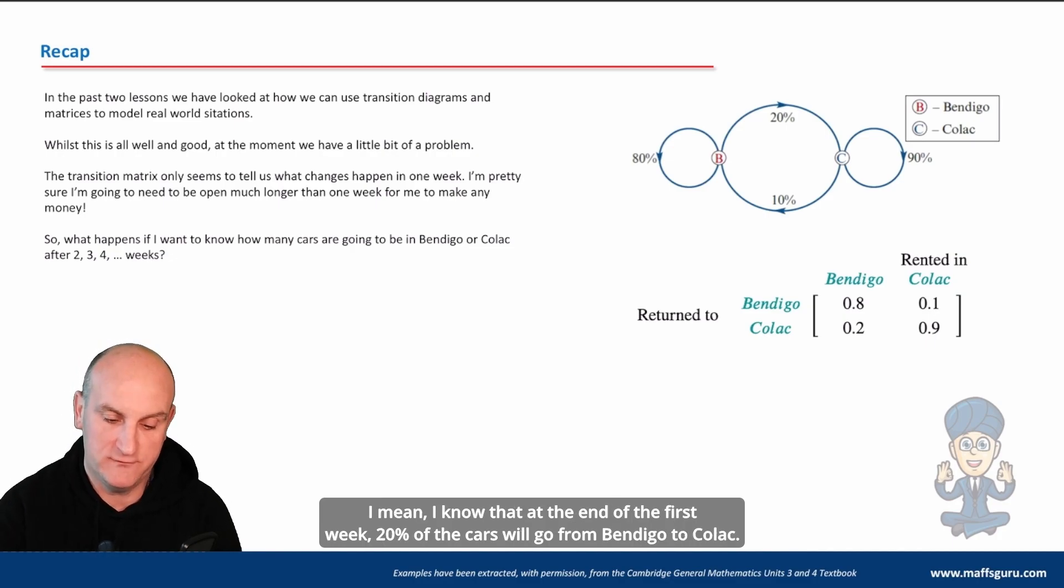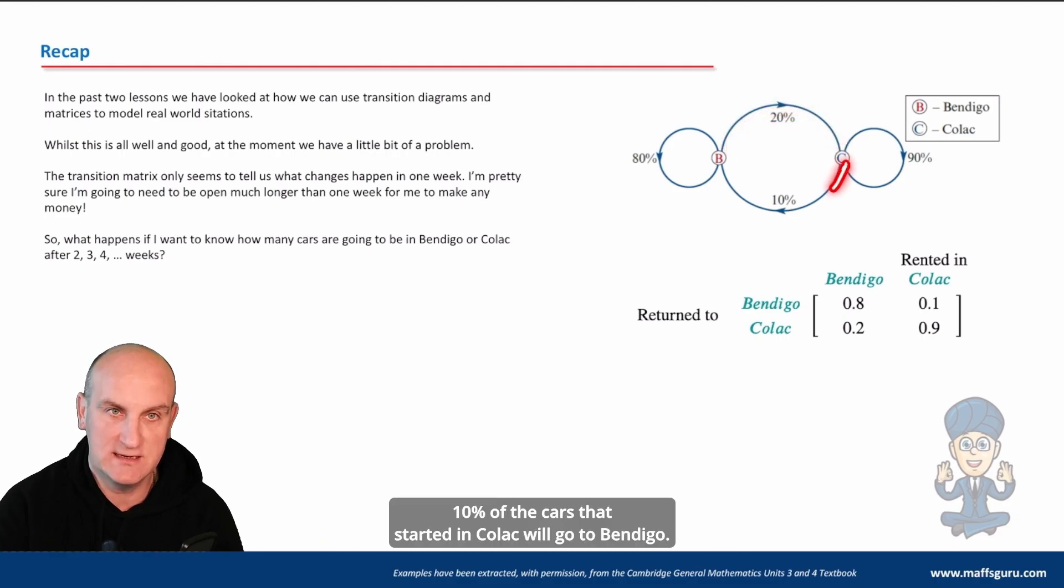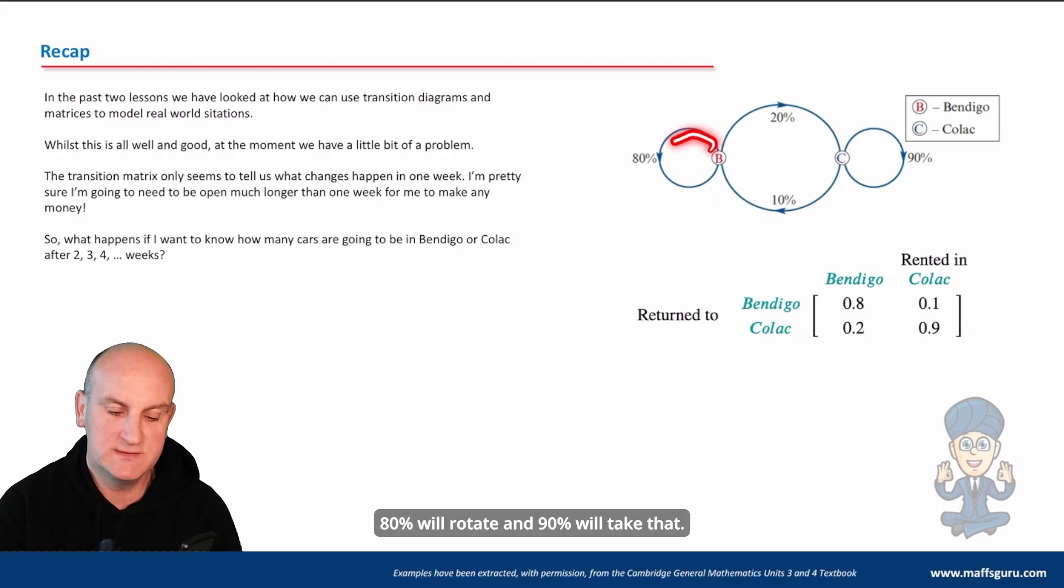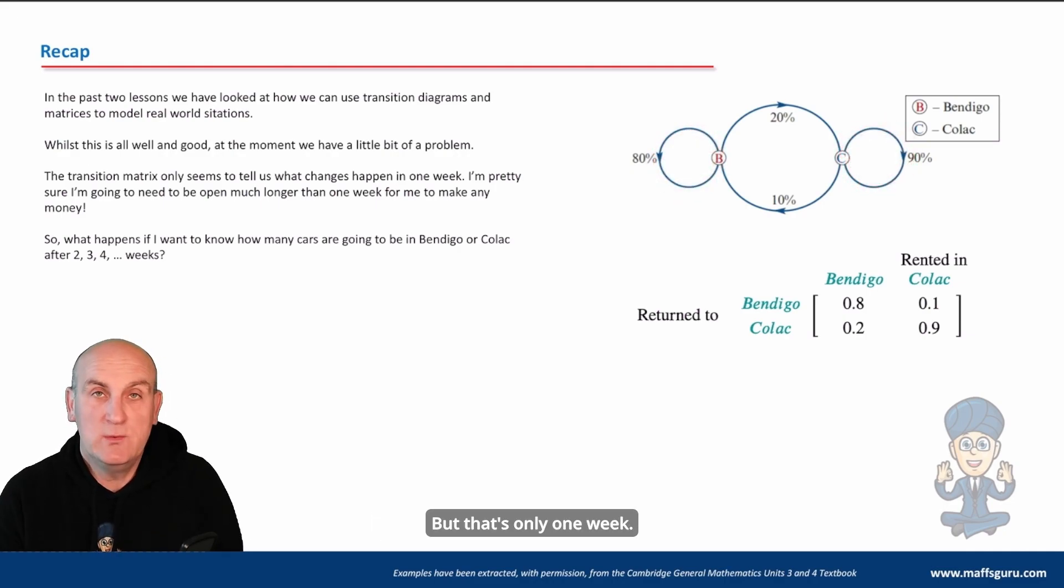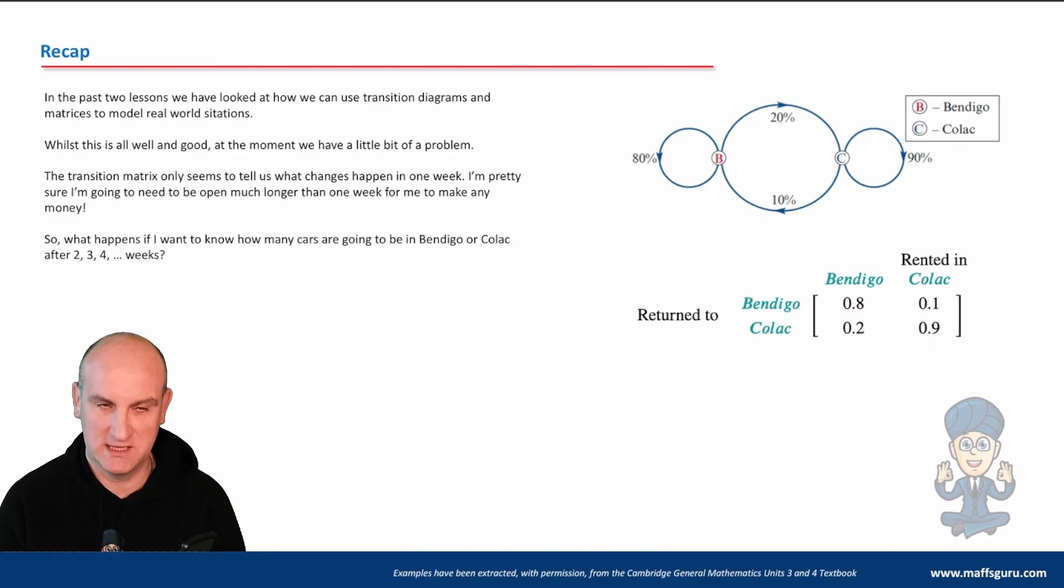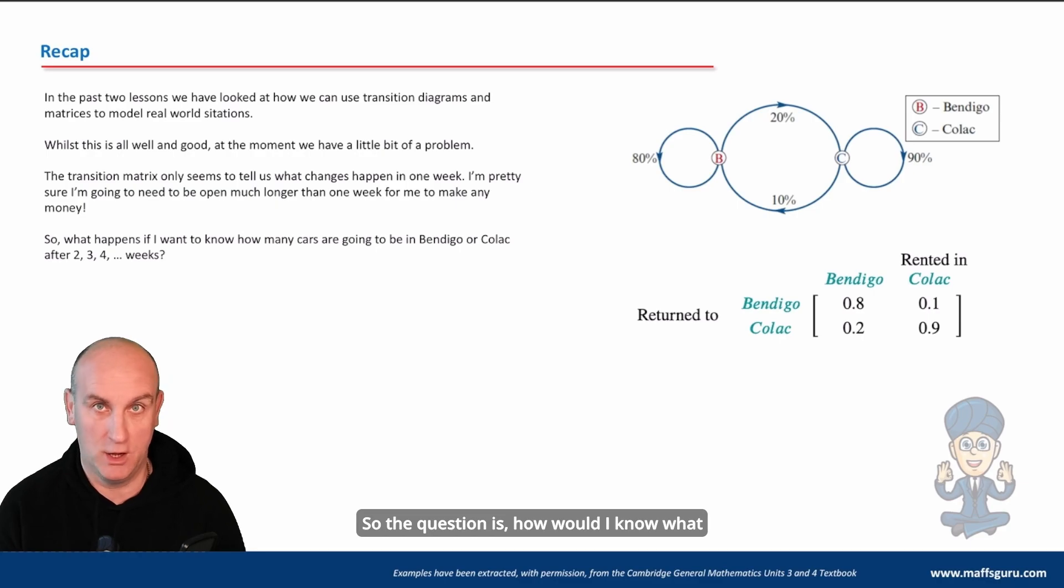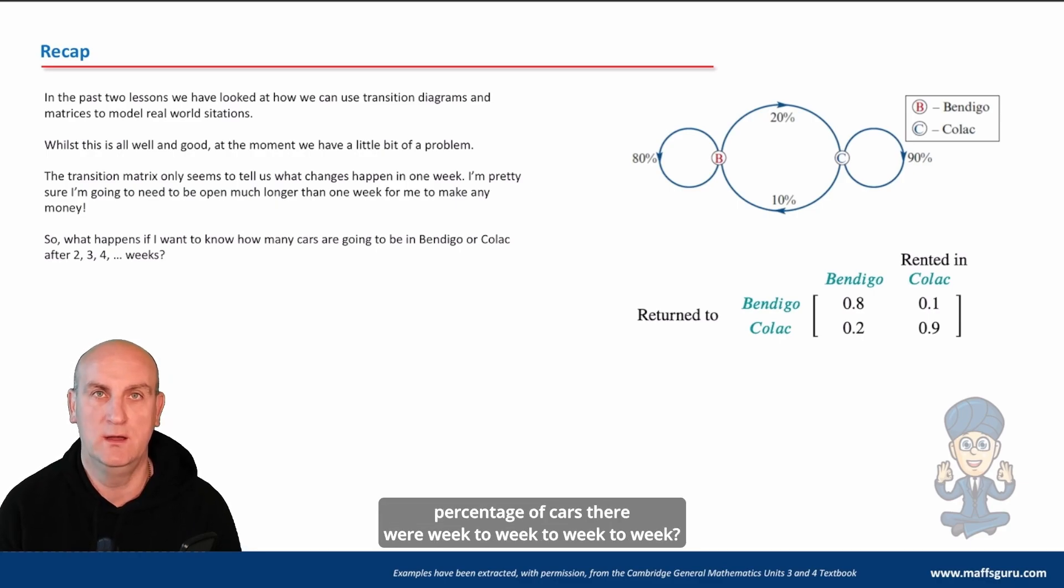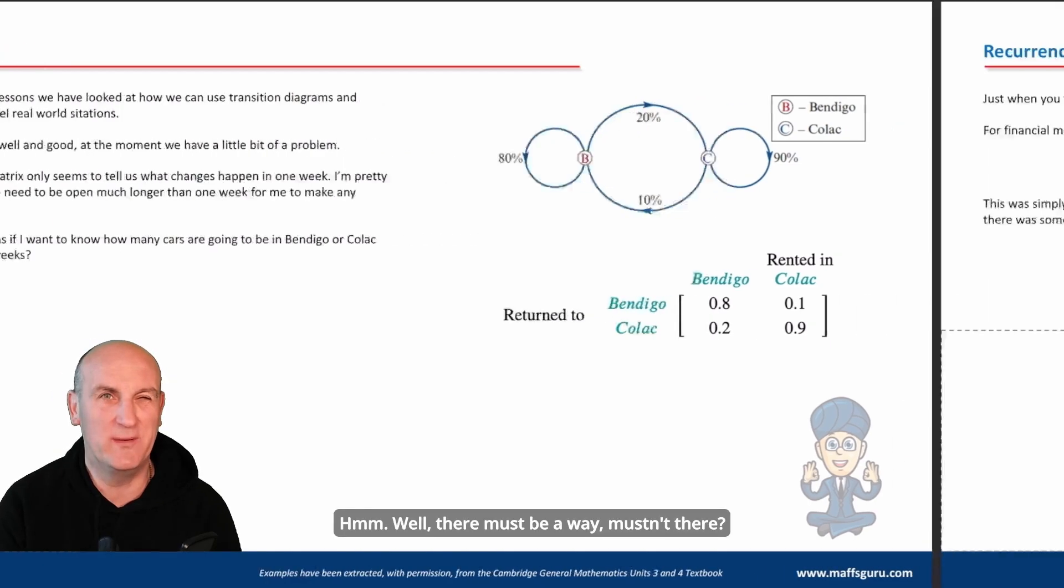I mean, I know that at the end of the first week 20% of the cars will go from Bendigo to Colac, 10% of the cars that started in Colac will go to Bendigo, 80% will rotate and 90% will rotate there, but that's only one week. I'm hoping to be in business slightly longer than one week, so the question is, how would I know what percentage of cars there were week to week to week to week? Well, there must be a way, mustn't there?